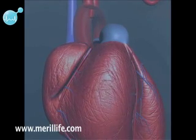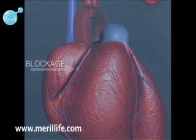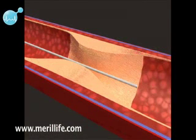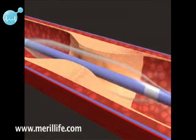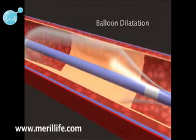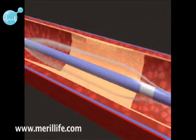A balloon catheter is guided to the site of the blockage over a guide wire in the coronary artery. The balloon is then inflated and deflated until the blocked artery opens.